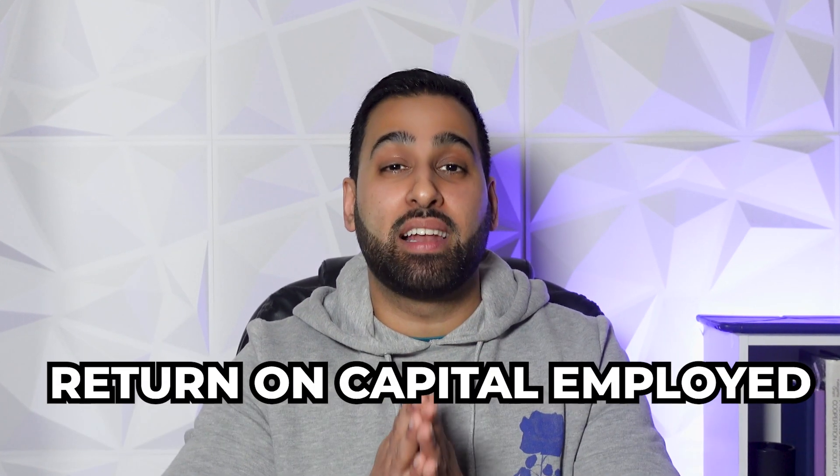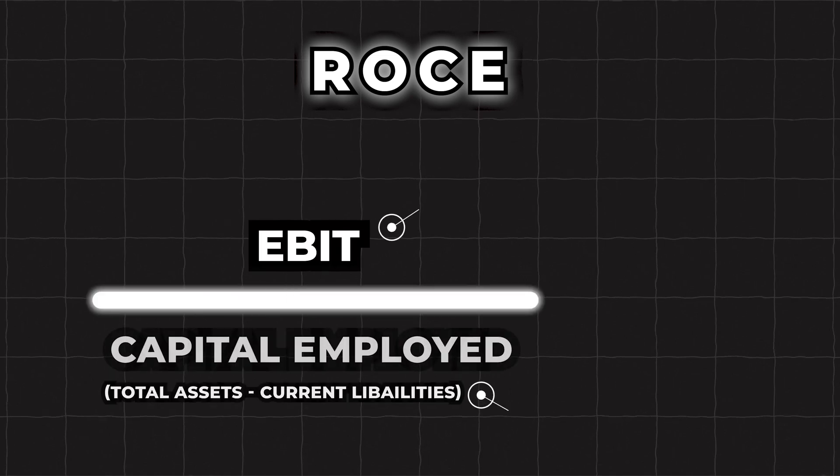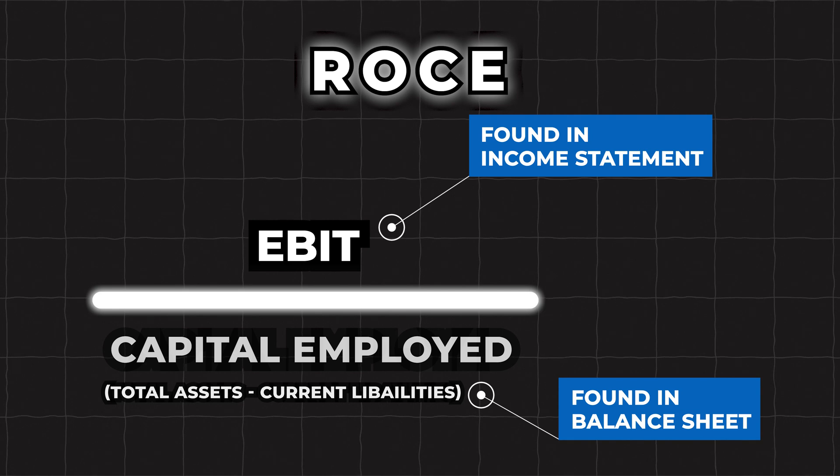The second profitability figure is really interesting as it goes to the heart of how well the company is being run — and that's Return on Capital Employed, or ROCE. ROCE tells you the amount of profit a company is generating per one dollar of capital employed. Its calculation is more complicated: divide Earnings Before Interest and Tax (EBIT) by capital employed, where capital employed is found by subtracting current liabilities from total assets — ultimately representing shareholders' equity plus long-term debts. Investors tend to favor companies with stable and rising ROCE levels over volatile or downward-trending ones.